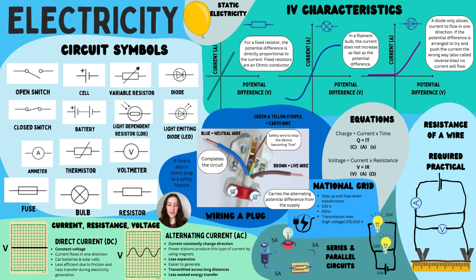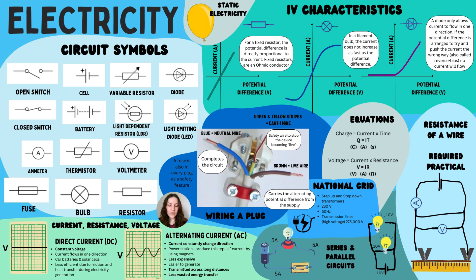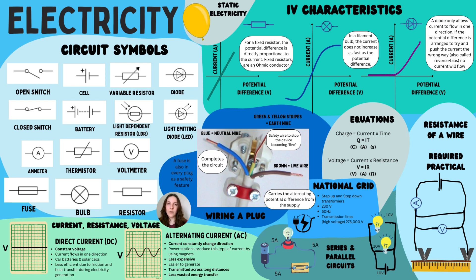In terms of plugs, you need to know three key wires. The blue wire is the neutral wire and completes the circuit. The green and yellow striped wire is the earth wire — a safety wire to stop the device becoming live. The brown wire is the live wire and carries the alternating potential difference from the supply. Inside the plug there is also a fuse, which is a safety feature that melts and breaks the circuit if the current gets too high. You also need to know the different circuit symbols — a battery is made of more than one cell, an ammeter measures current, and a voltmeter measures potential difference. Connect an ammeter in series and a voltmeter in parallel.